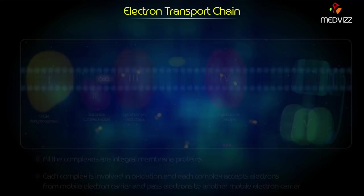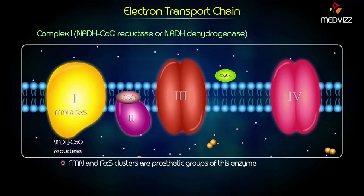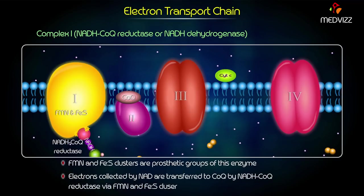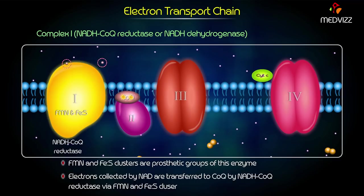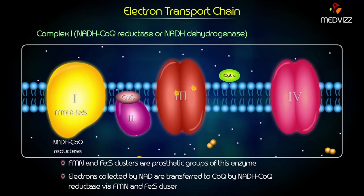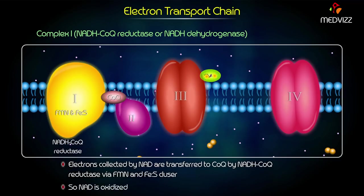Complex 1 is NADH coenzyme Q reductase, or NADH dehydrogenase. FMN and iron-sulfur clusters are prosthetic groups of this enzyme. Electrons collected by NAD are transferred to coenzyme Q by NADH coenzyme Q reductase via FMN and iron-sulfur cluster, so NAD is oxidized.